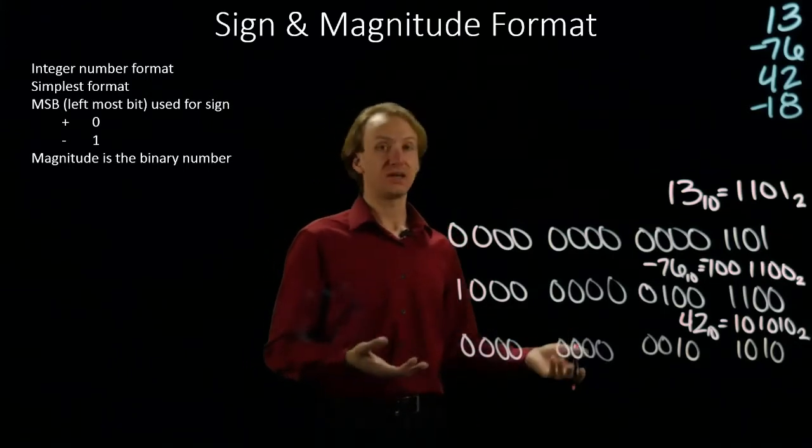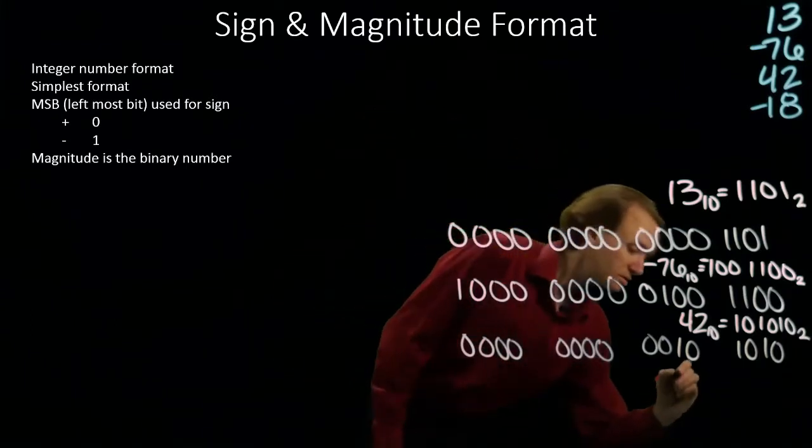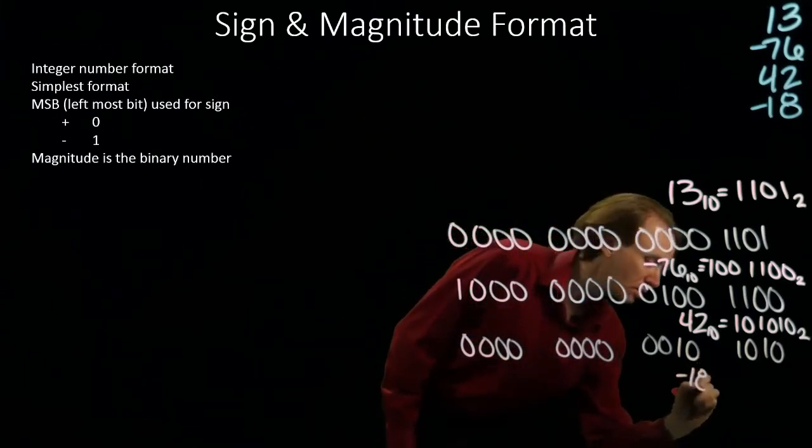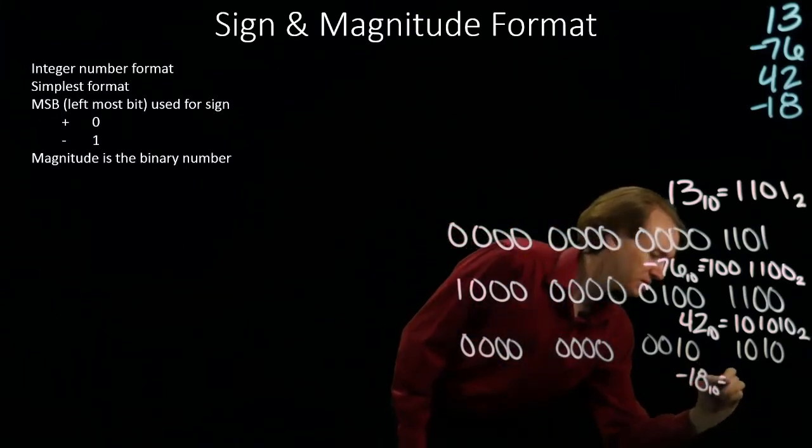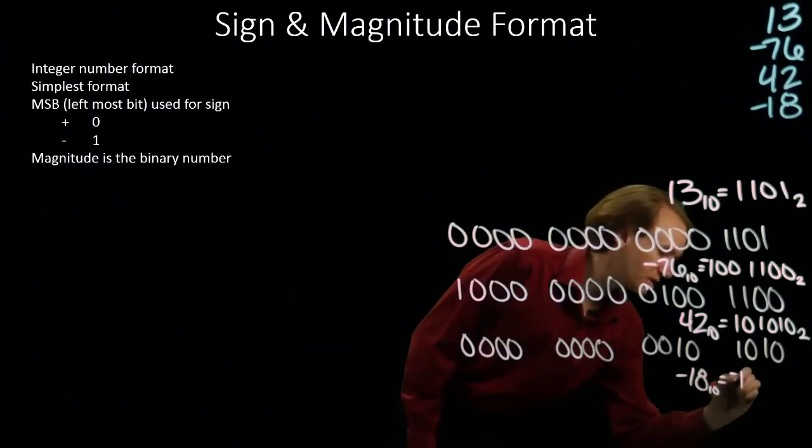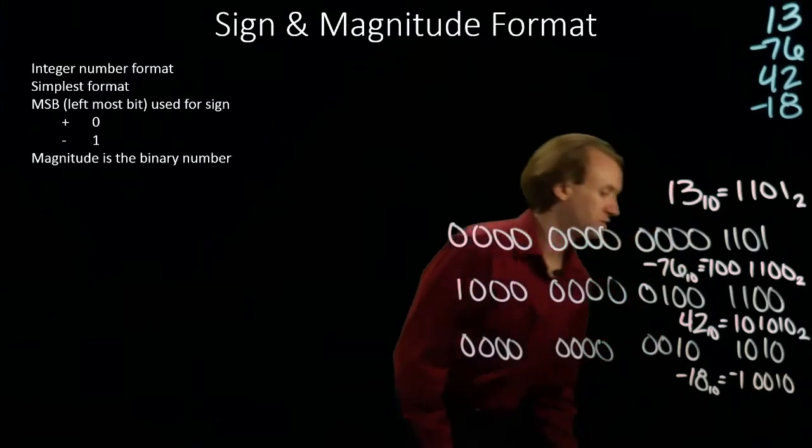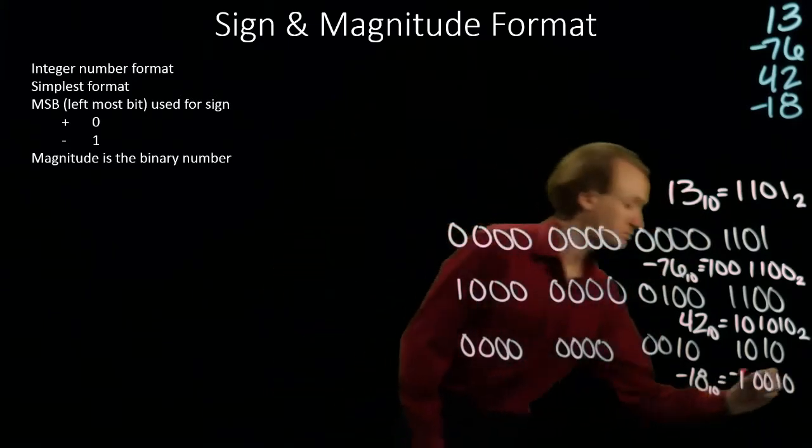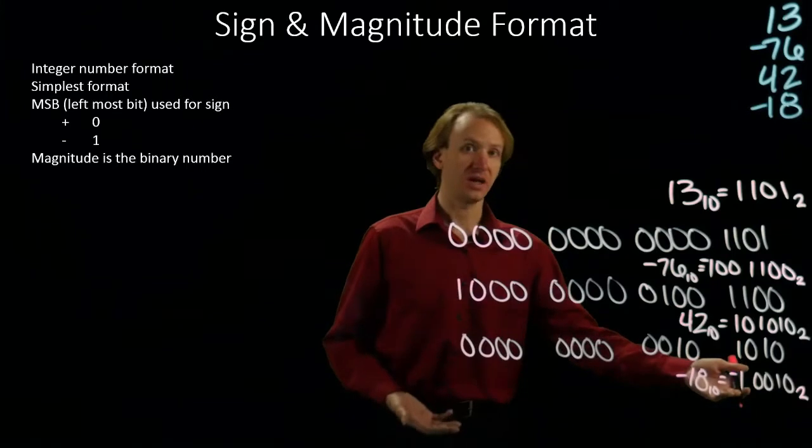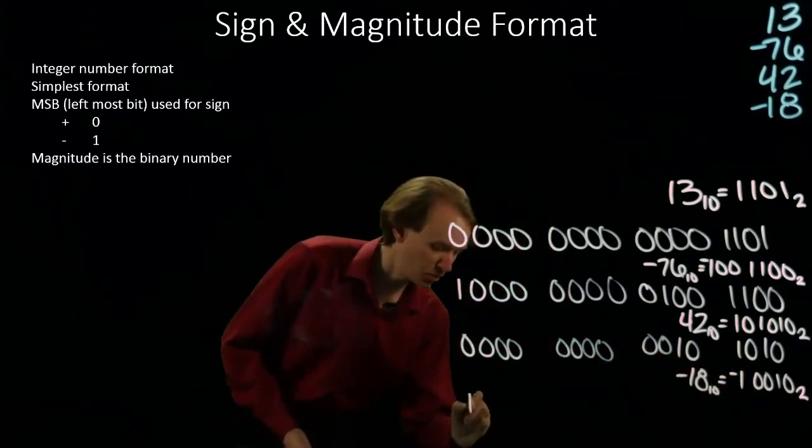The last number we've got is negative 18. Negative 18 in decimal is negative 16 plus negative 2. So again, I have a negative number, so my sign bit is a 1.